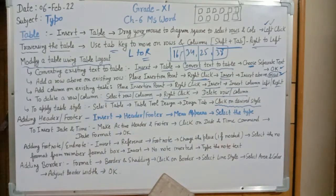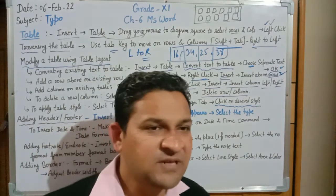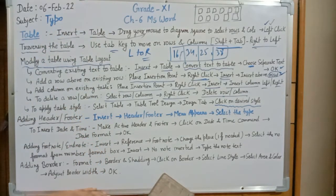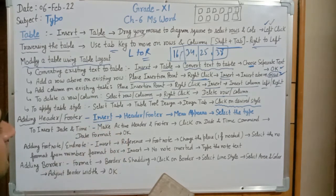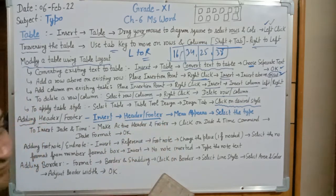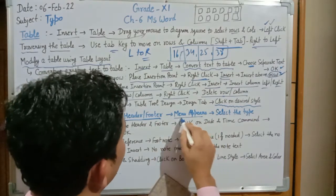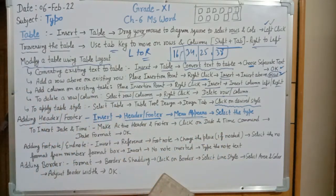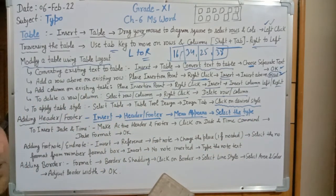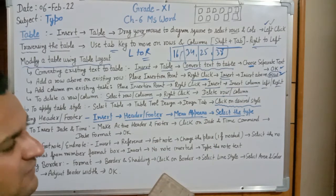Next concept is adding a header and footer. The header is always kept at the top of the document and the footer is kept at the bottom as a footnote area. To insert a header and footer: click on the Insert tab, go to the Header and Footer option — a menu list will appear. Select the type of header and footer you want, as more than seven or eight styles are available. Double-click on the desired style to apply it.